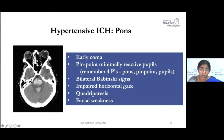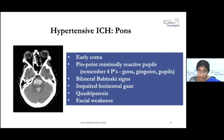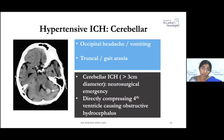Pontine bleeds are generally associated with a high mortality rate. Damage to the reticular networking system in the pons causes deep coma. Pupils become pinpoint, pyramidal tracts are affected causing bilateral Babinski signs, and horizontal gaze palsy and facial weakness may occur due to midbrain involvement. Cerebellar lesions produce truncal ataxia, occipital headaches, and vomiting.